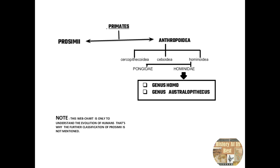Prosimii was not so important in the evolution of humankind. Prosimii includes lemurs, lorises, and tarsiers. Anthropoidea was very important and was further divided into three superfamilies: Old World monkeys, New World monkeys, and the human Hominoidea. Old World monkeys were often called Cercopithecoidea, New World monkeys were Ceboidea, and the human lineage falls under Hominoidea.